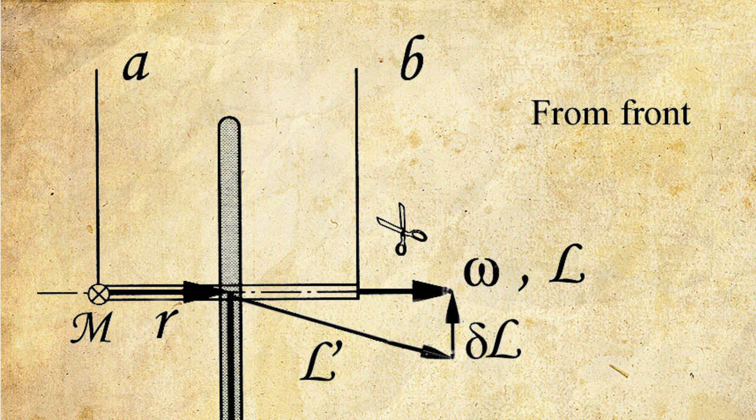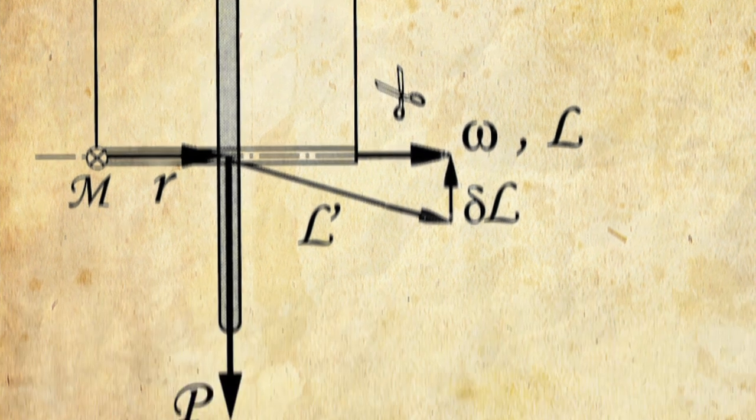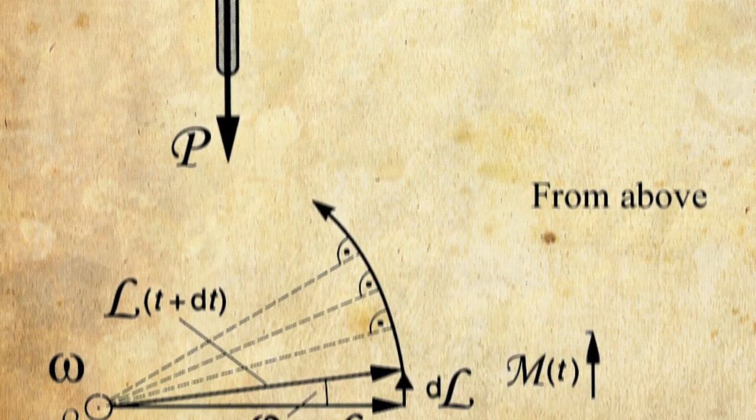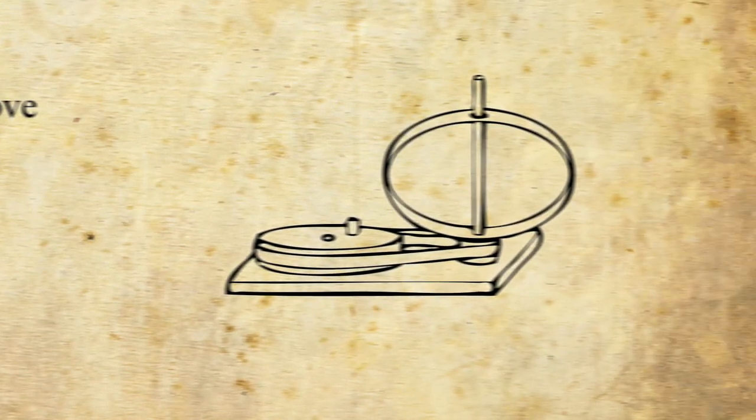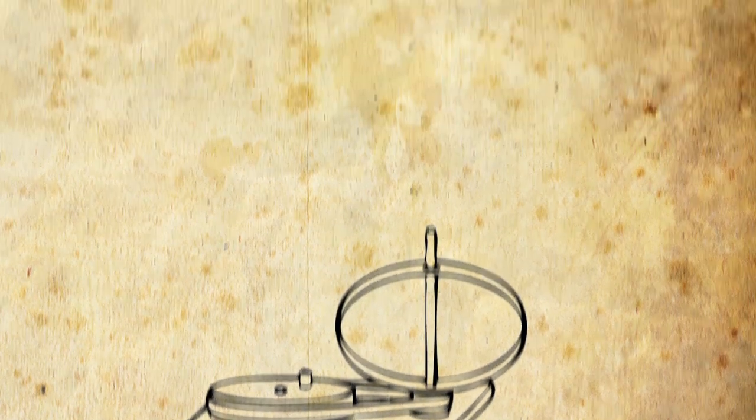The technical details behind precession are beyond the physics covered in introductory astronomy, but they focus on the fact that Earth is not spherically symmetric but oblate, fatter around the middle, and the gravitational pulls of the Sun and Moon on this equatorial bulge cause precession.